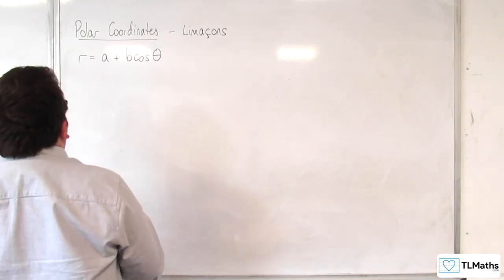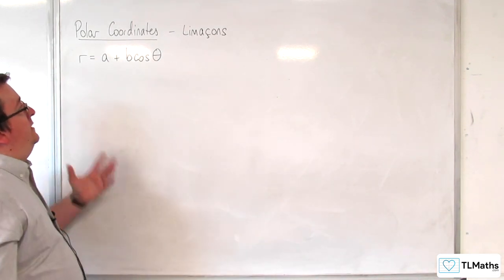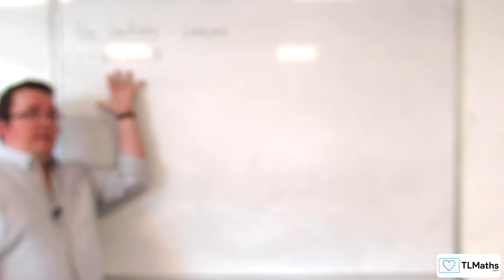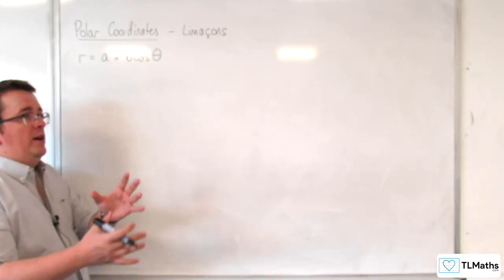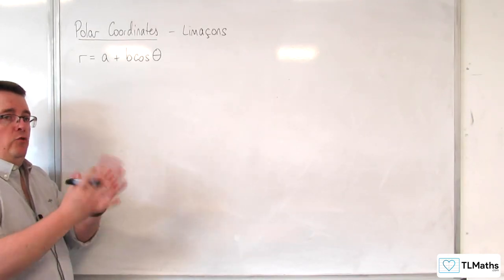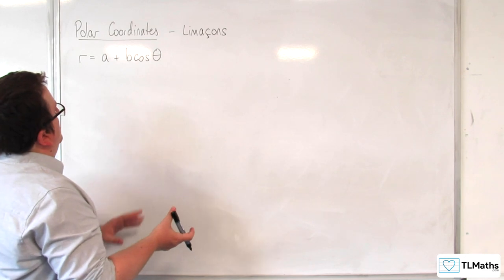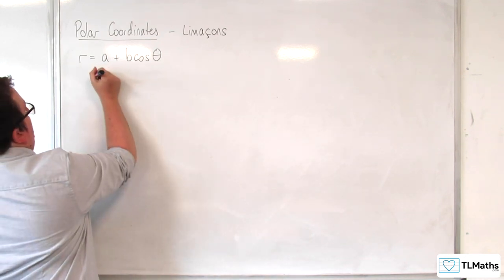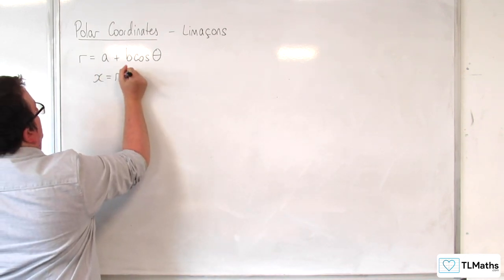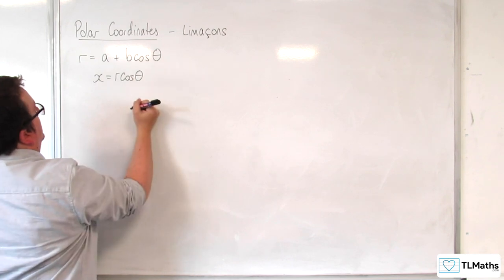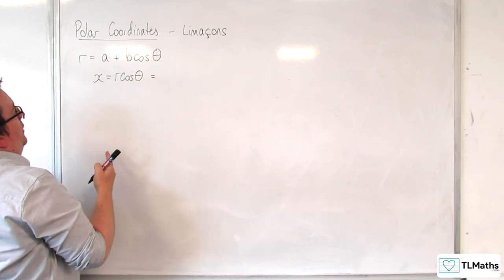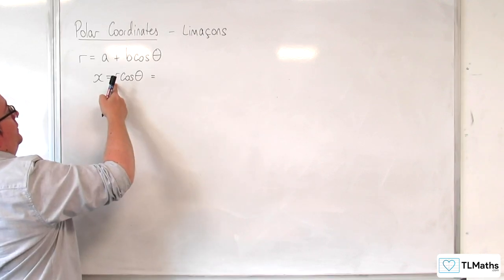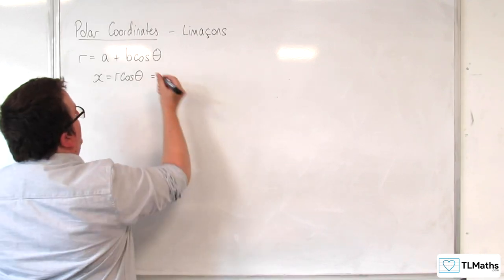So, in order to investigate that, I'm going to need to find dy by dx for this. How we do that is, if we think back to when we converted between polar and Cartesian form, we could say that x is equal to r cosine theta. Now, if r is a plus b cosine theta, I can substitute that directly into this and multiply it by cosine theta.